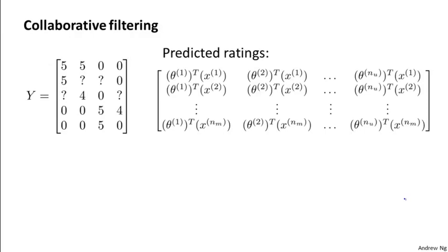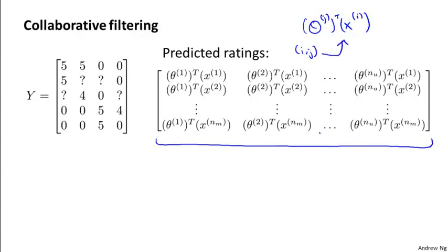And in particular, if you look at what a certain user predicts on a certain movie, what user j predicts on movie i is given by this formula. And so, if you have a matrix of the predicted ratings, what you would have is the following matrix, where the i comma j entry, so this corresponds to the rating that we predict user j would give to movie i, is exactly equal to that theta j transpose xi.